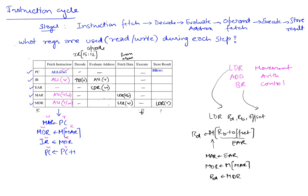For branch, it's similar. Branch does evaluate an address, but we don't fetch any data because we're just transferring to that location. Branch writes to the PC during execute — if the branch condition is satisfied, we write to the PC to change it to whatever is in the EAR register. That's in contrast to LDR, where whatever is in the MDR goes to the destination register. So that completes our entire table.